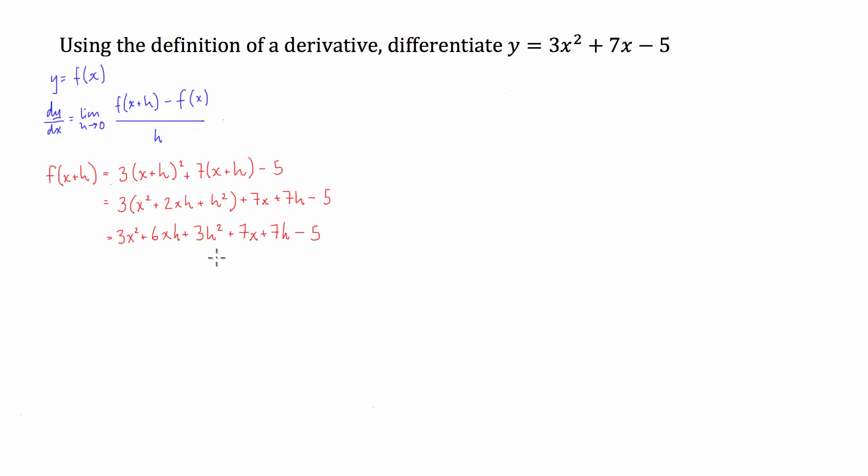Great. Now what we have to do then is from this, we have to subtract the function at x. So the function at x is this. So to subtract that, we're going to minus 3x² minus 7x plus 5. So this piece here is minus f of x.